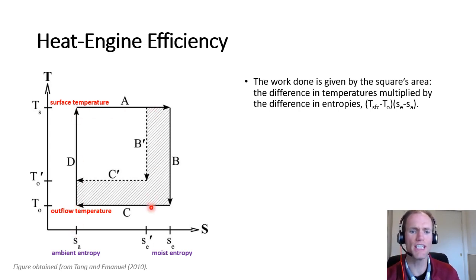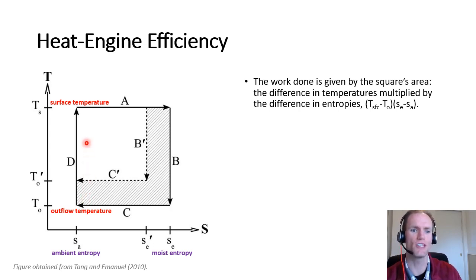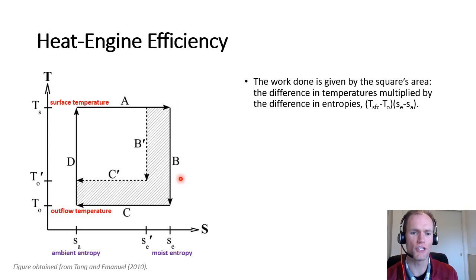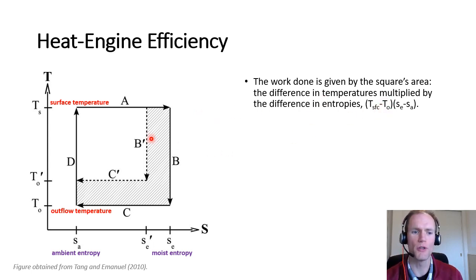Along leg C, the isothermal descent at large radii, entropy and enthalpy decrease while temperature is maintained at the outflow temperature. Along leg D, descent continues from the upper troposphere back toward the surface, cooling from outflow to surface temperature moist adiabatically — adiabatic compression warming is offset by radiative cooling — maintaining entropy roughly at its ambient environmental value. The area of this square ABCD is the work done to fuel the cyclone's winds: the product of the side lengths, which are the temperature difference and the entropy difference.